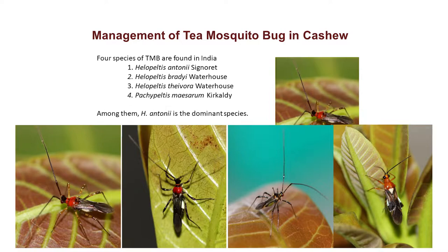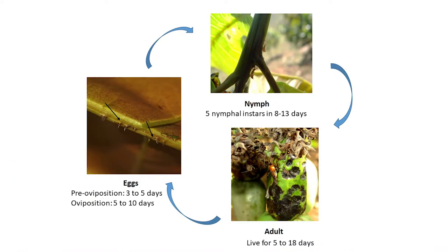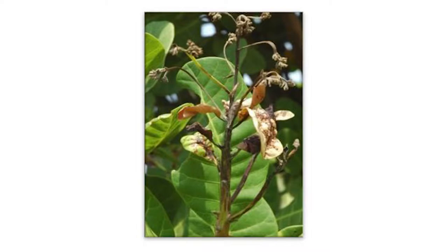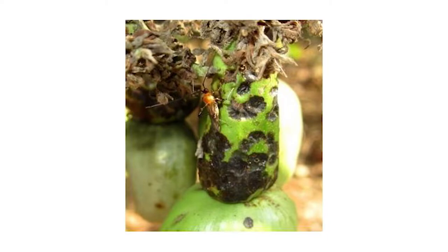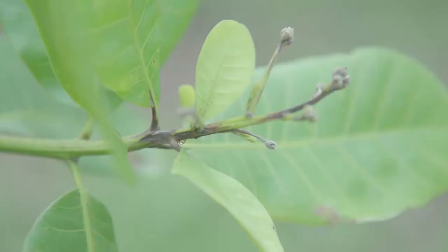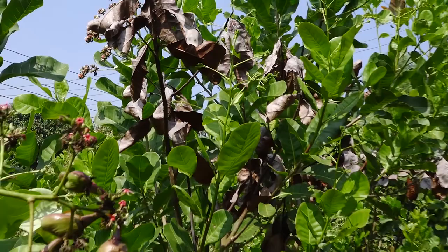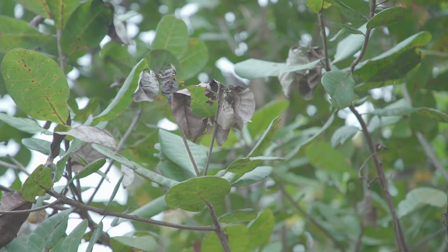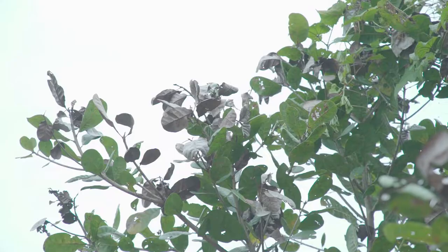Among them, Helopeltis antonii is the dominant species. Both nymphs and adults feed by sucking plant parts such as tender shoots, inflorescence or panicles, developing nuts and apples. The typical feeding damage by tea mosquito bug appears as a discolored necrotic area or a lesion around the point of feeding of the insects.